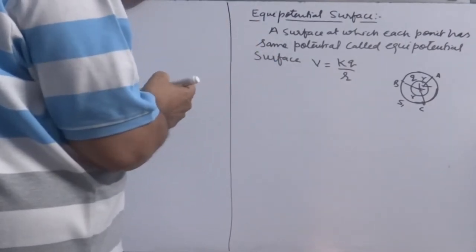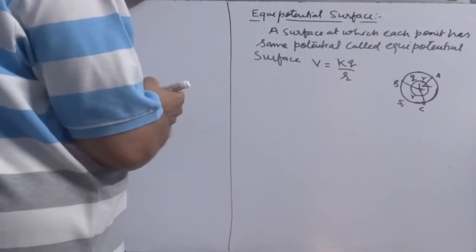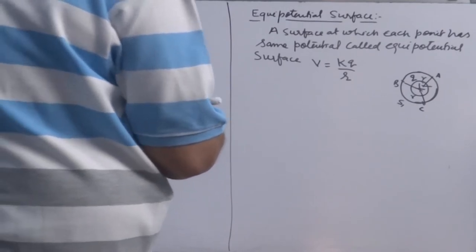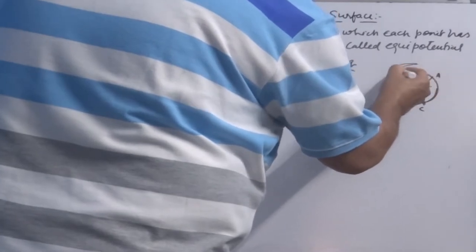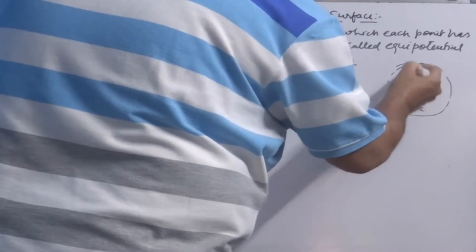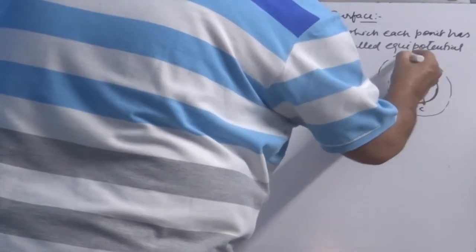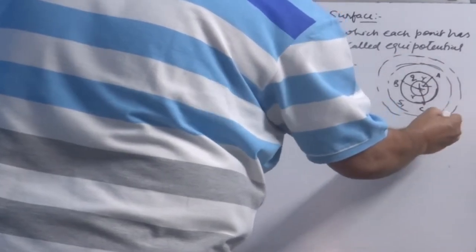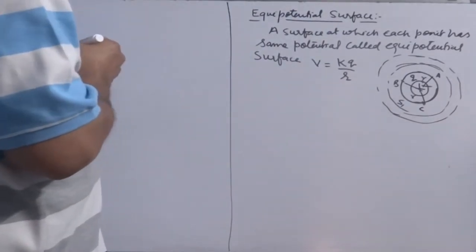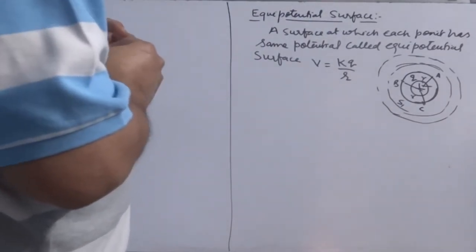A spherical surface around a positive charge is an equipotential surface. Likewise, you can plot as many spheres, concentric spheres around it. Each concentric sphere around a positive or negative charge will be an equipotential surface.